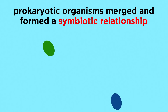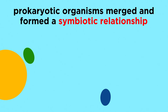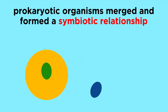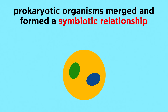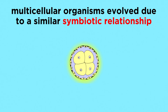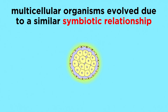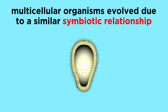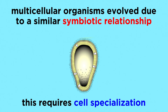Just the way endosymbiotic theory showed us how unicellular organisms came together to form more complex cells by way of a symbiotic relationship, we can imagine how individual cells produced during mitosis could also become an individual organism through the advent of cell specialization, and the mutual benefits that are then enjoyed by all the cells in the organism.